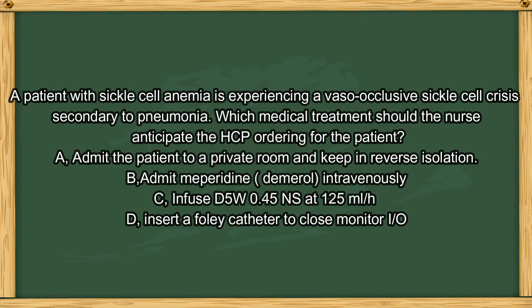Next question. A patient with sickle cell anemia is experiencing a vasoocclusive sickle cell crisis secondary to pneumonia. Which medication or treatment should the nurse anticipate the HCP ordering? A. Admit to a private room and give reverse isolation. B. Administer meperidine and Demerol IV. C. Infuse D5W half normal saline at a rate of 125 mL per hour. Or D. Insert a Foley catheter to closely monitor intake and output.